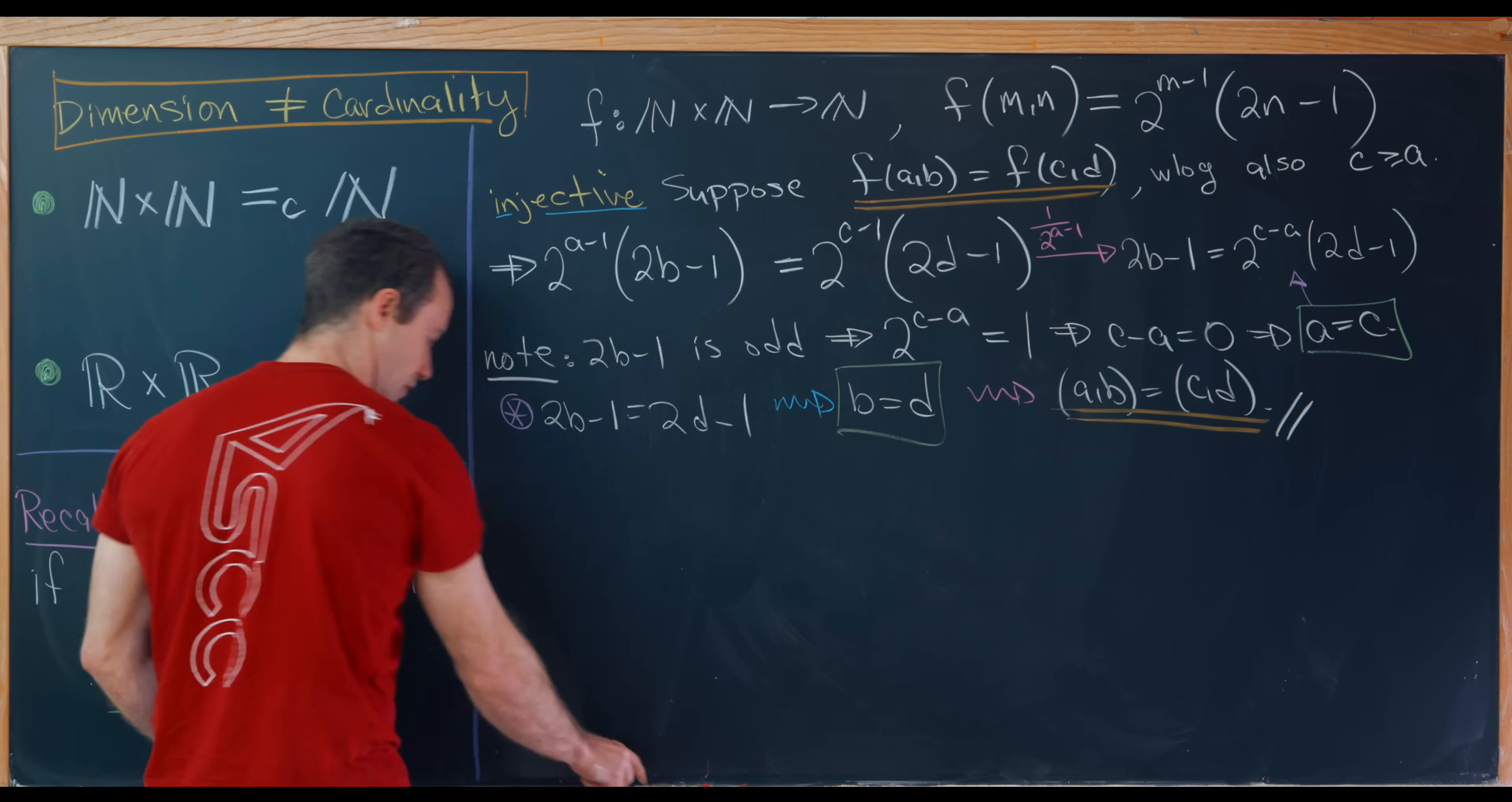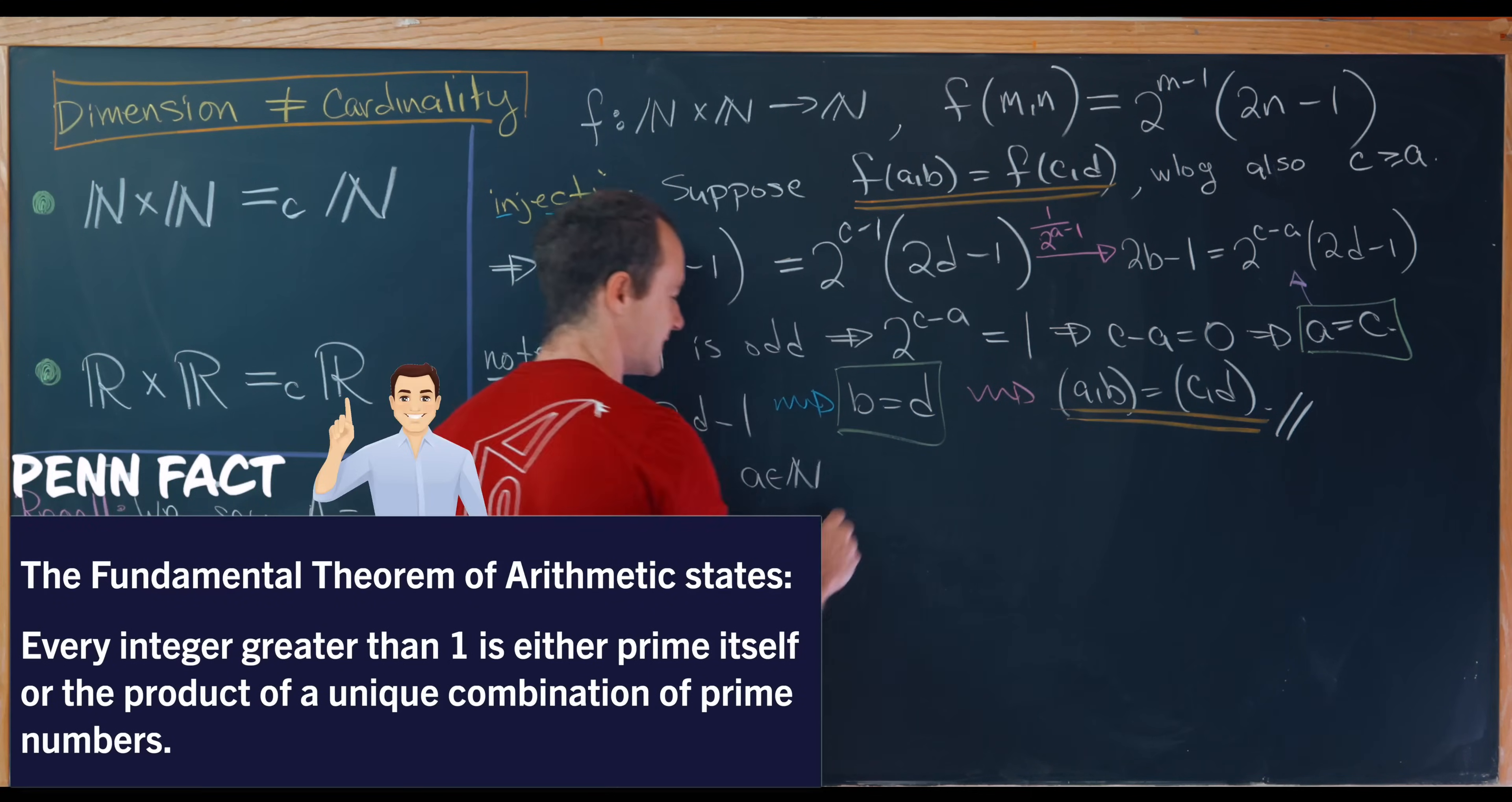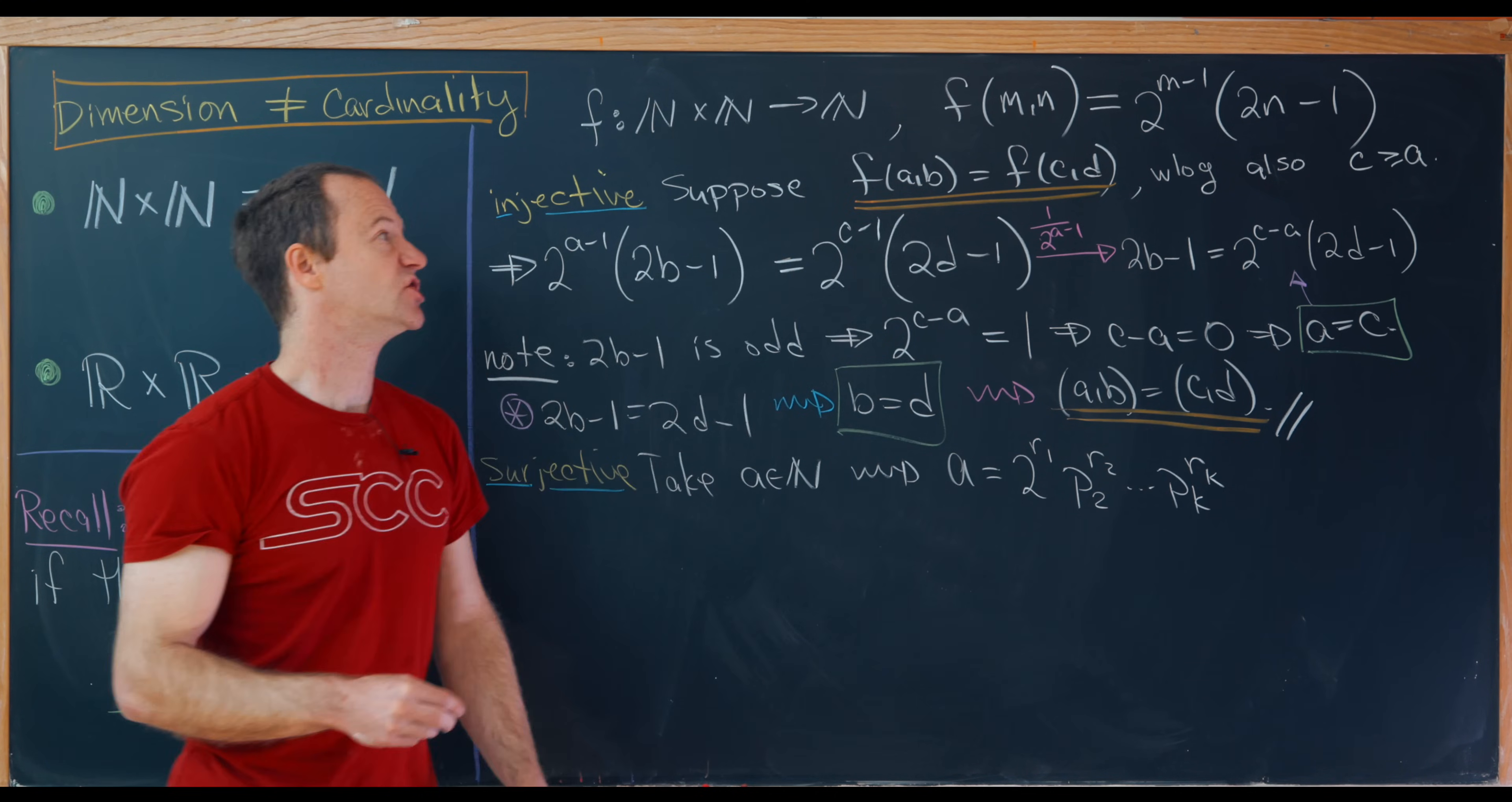Okay, so now let's move on to showing that this thing is also surjective. In other words, it's onto. So if it's injective and surjective, then it is bijective. So let's maybe take some number, maybe we'll call it a, which is a natural number. And then let's use the fundamental theorem of arithmetic to factor this into primes. So we'll have a is equal to 2 to the r1 times p2 to the r2 all the way up to pk to the rk, where I've written 2 as its own prime. Remember there's only one even prime, so I'm going to write that on its own. That's motivated by the shape of f here.